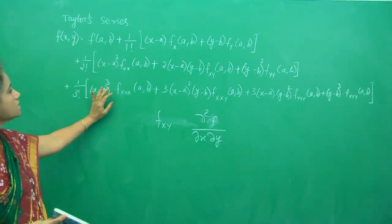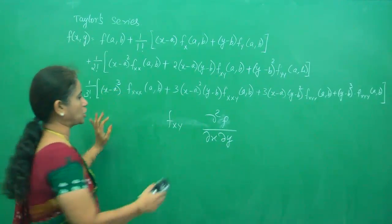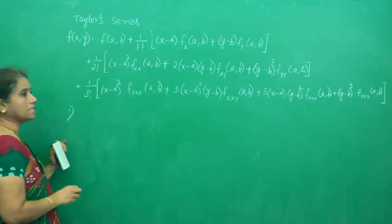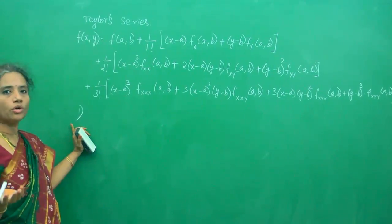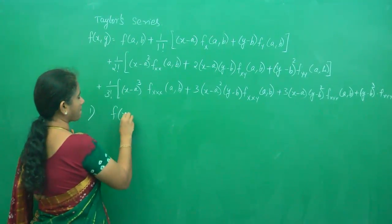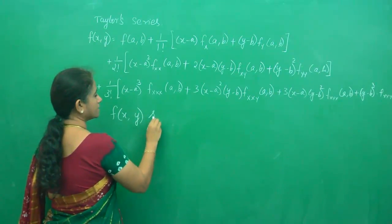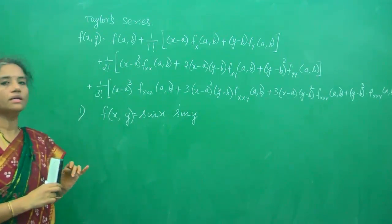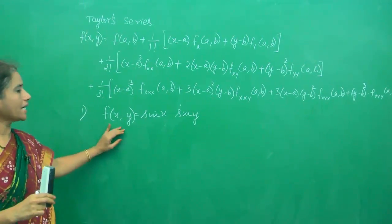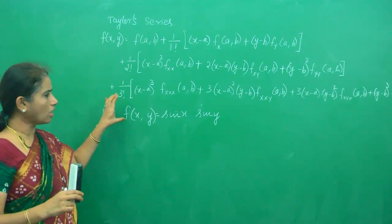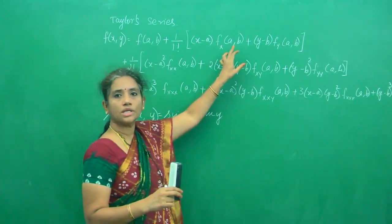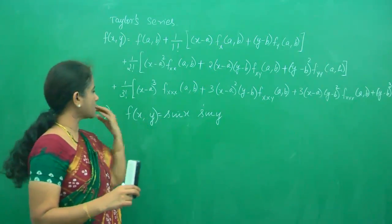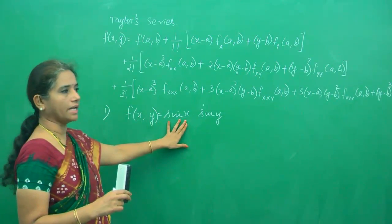Once you are clear with this concept, we can go and expand a few functions using Taylor's expansion. The first question is: you are going to expand f(x, y) = sin(x)·sin(y), and you are going to expand it near the origin. I am starting with an easy question, because at the origin your a and b become 0, 0. So the calculations are a little easier.